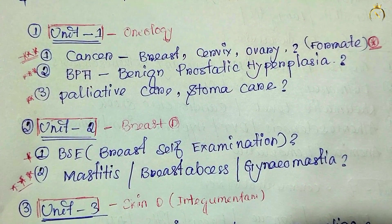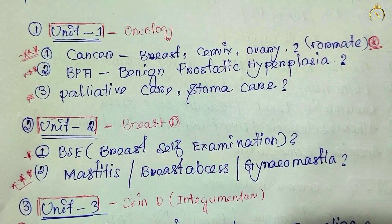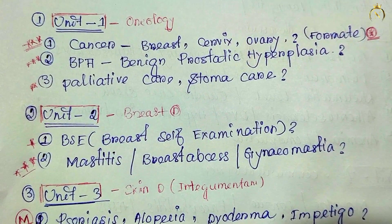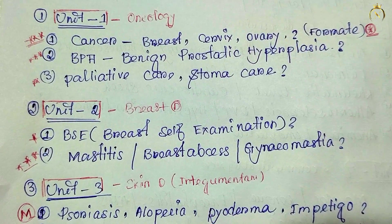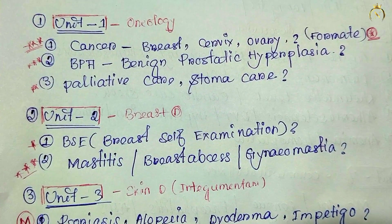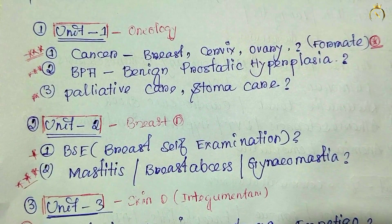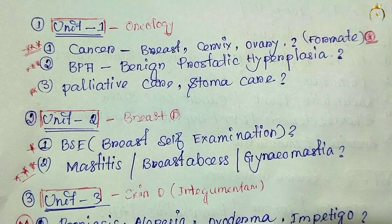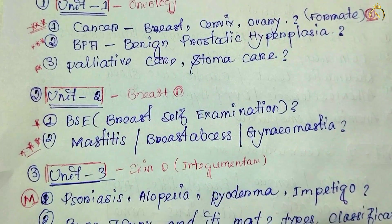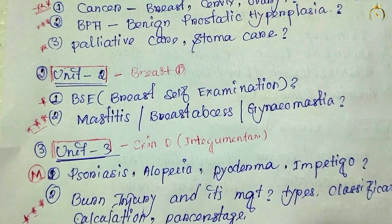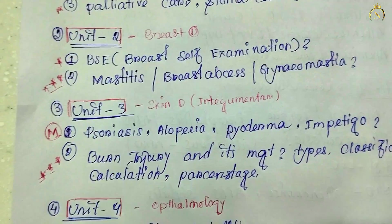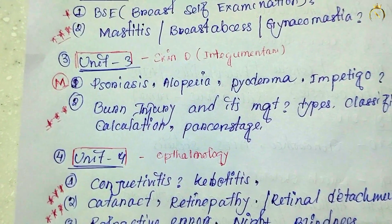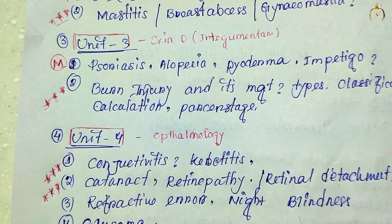From Unit 2, breast-based topics are important. Breast self-examination, mastitis — mastitis is the most important — breast abscess, and gynecomastia are mainly coming for the exam.